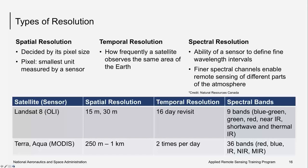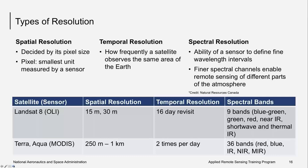Spatial resolution refers to how the area on the ground translates to one pixel, the smallest unit measured by the sensor. For example, one Landsat 8 OLI pixel can be about 15 or 30 meters. Temporal resolution refers to how often a sensor obtains an image of a particular part of the globe — Landsat 8 returns every 16 days, while MODIS has a return rate of about one to two times per day. Spectral resolution refers to how many bands an imager can collect — MODIS has 36 spectral bands, whereas Landsat 8 has about nine.